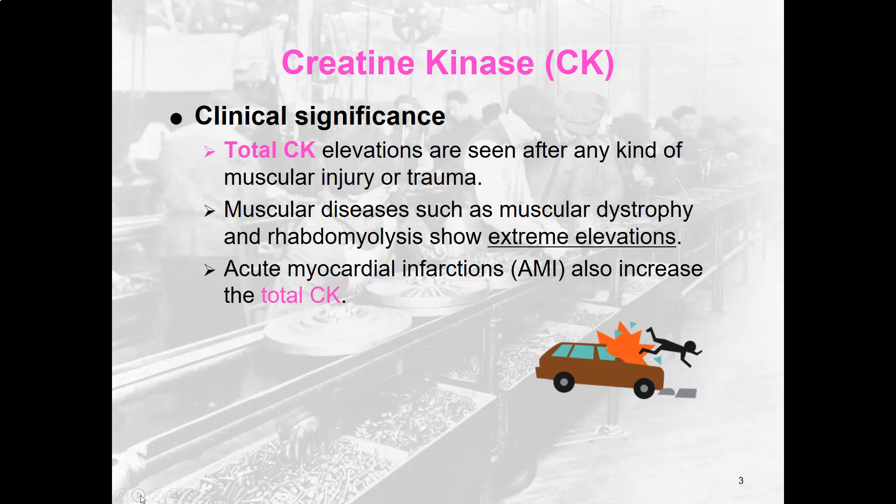A normal CK is usually less than 200 enzymatic units per liter. Acute myocardial infarction can also increase total CK, but it won't be as drastic an increase as you would see in rhabdomyolysis or muscular dystrophy.